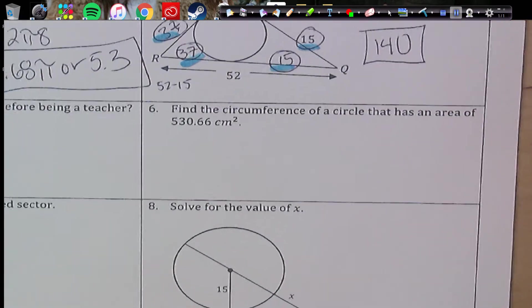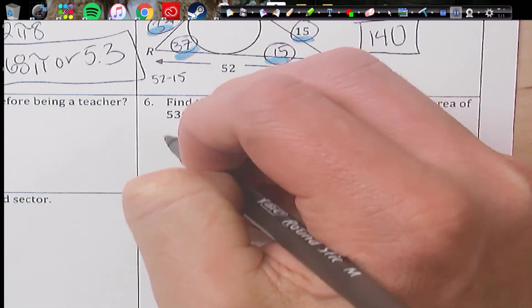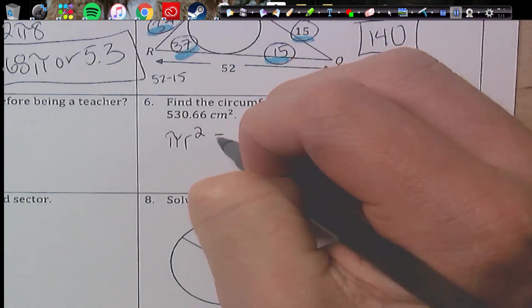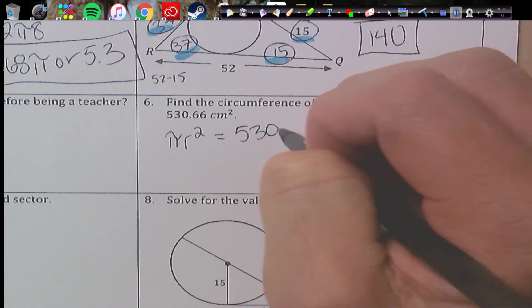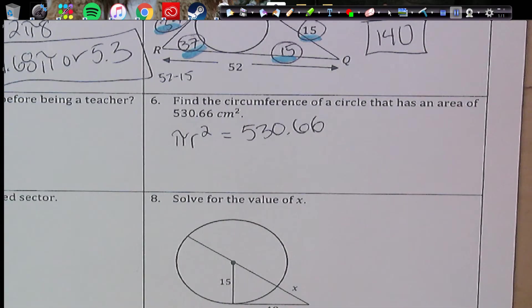Number six, find the circumference of a circle that has an area of 530.66. So first of all, area of a circle is πr². So we set it equal to 530.66. Now, this is a problem you also want to kind of do in your calculator. So the first thing is 530.66.